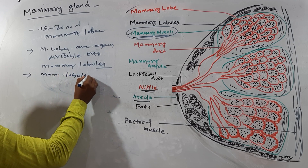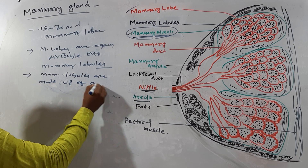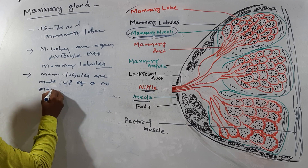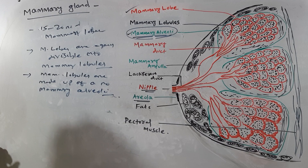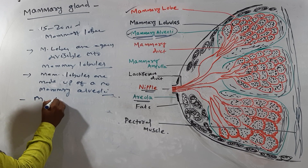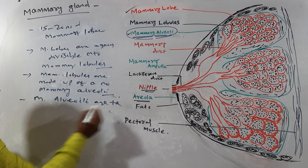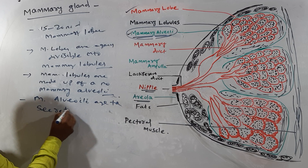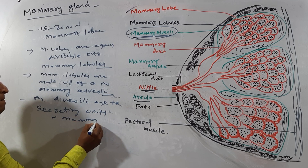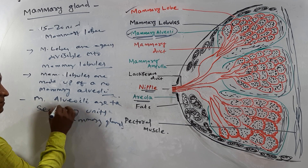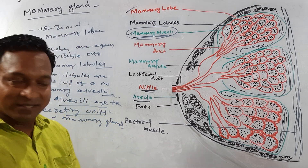Mammary lobules are made up of a number of mammary alveoli. These mammary alveoli are the secretory units of the mammary gland and are responsible for the production of milk.